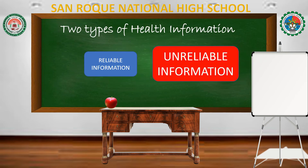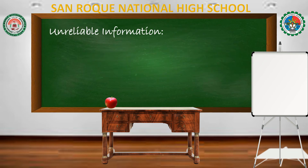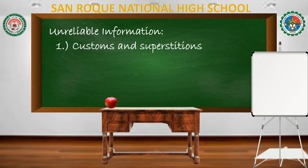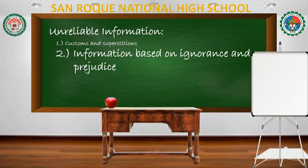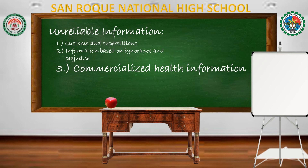Now let's go to unreliable information. The unreliable information types are: first, customs and superstitions; number two, information based on ignorance and prejudice; and the last one is commercialized health information.